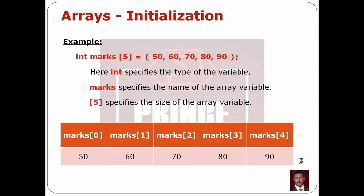If we store any elements in the array, the array variable holds 5 elements with continuous memory allocation. We use index numbers to refer to elements. The first element is at position 0 — that is marks[0]. The last element, at index 4, is marks[4].